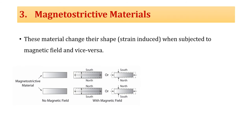Another type of smart material is magnetostrictive material. Magnetostrictive materials change their shape whenever there is a change in a magnetic field. Conversely, if there is a change in the texture or shape of the magnetostrictive material, there will be a change in the magnetic field. This type of smart material is used in energy harvesting and generating electricity.